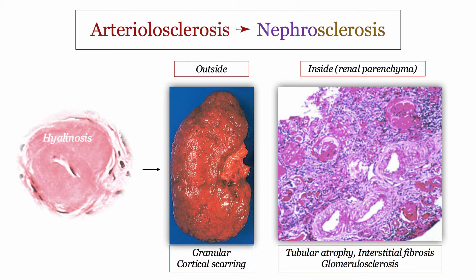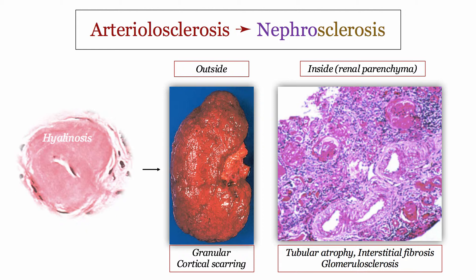You need to be familiar with how that scarring will appear and how it will be described. Macroscopically, the shrunken kidney demonstrates a classic granular appearance due to cortical scarring. On the inside, also referred to as the renal parenchyma, there is more scarring. It is described as the final common pathway in all states of chronic hypoperfusion, which includes tubular atrophy, interstitial fibrosis, and glomerulosclerosis.